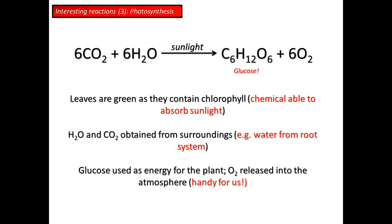Last but not least, probably the most important chemical reaction on Earth is photosynthesis. Leaves are green because they contain a chemical called chlorophyll, which can absorb sunlight and use that energy to combine water and carbon dioxide to form glucose — your source of energy — and oxygen, which is expelled by the leaves. That's just a basic introduction to chemical reactions. For more, come and study with me at the University of Wolverhampton. Thank you, bye.